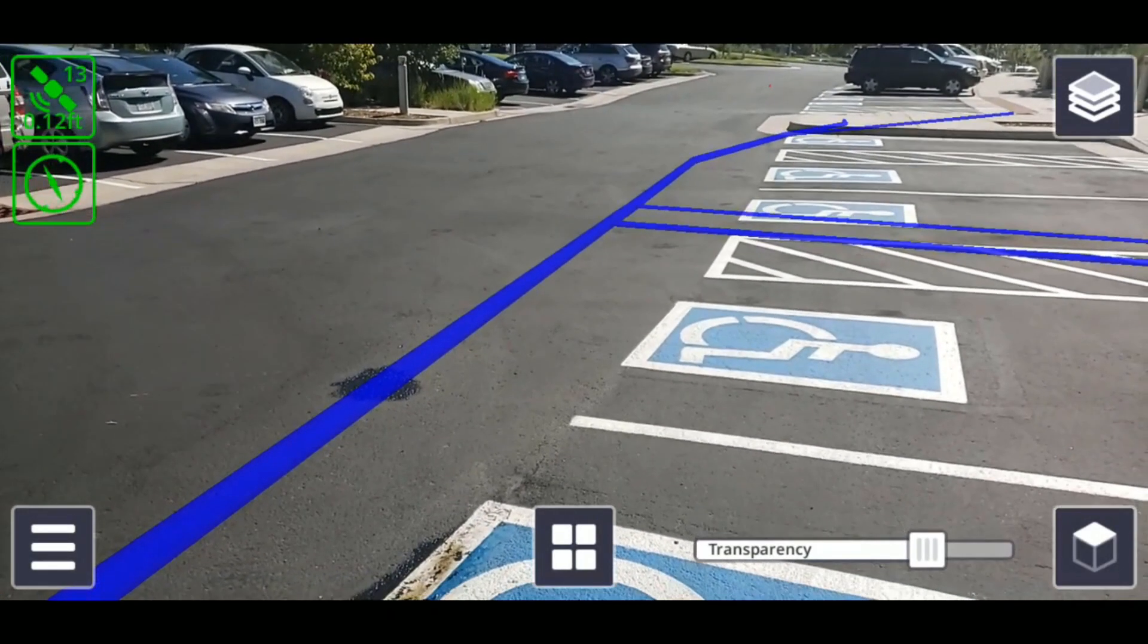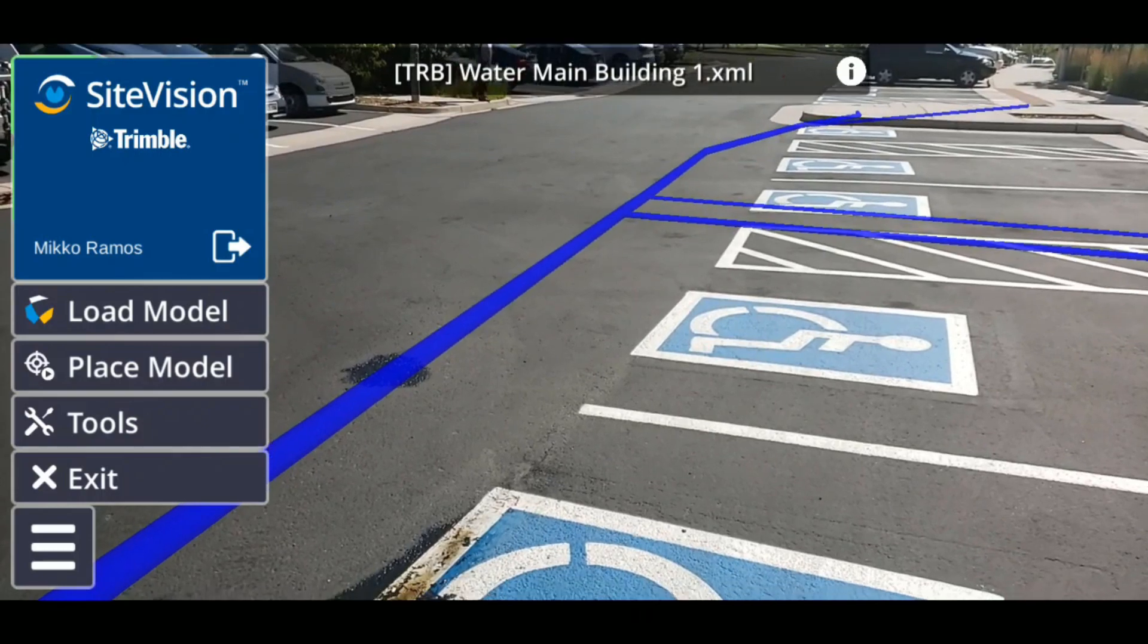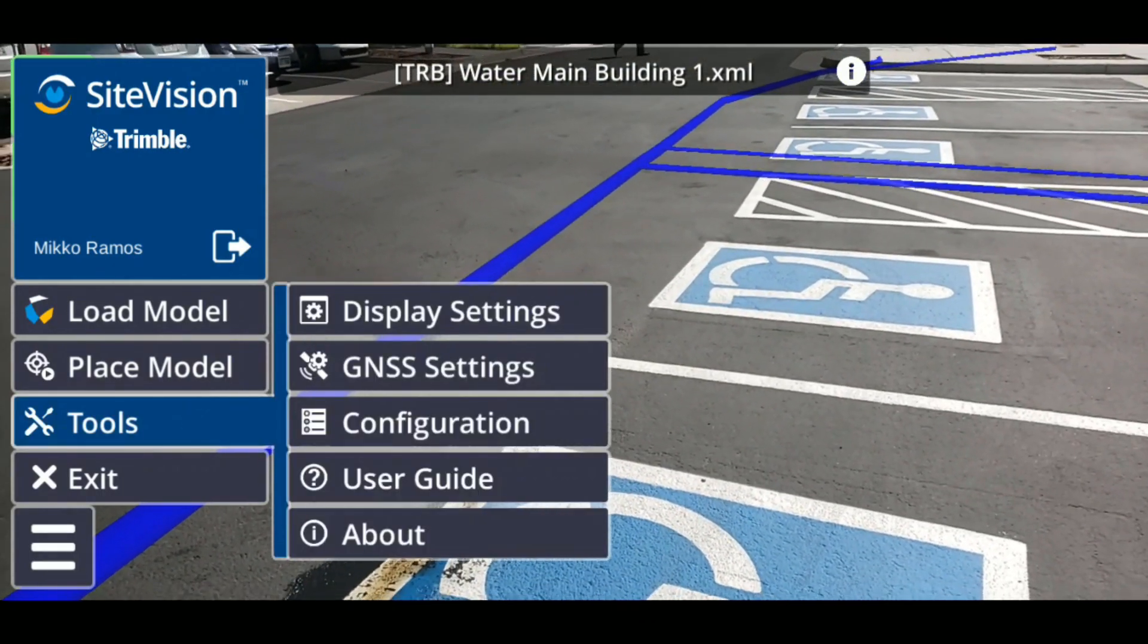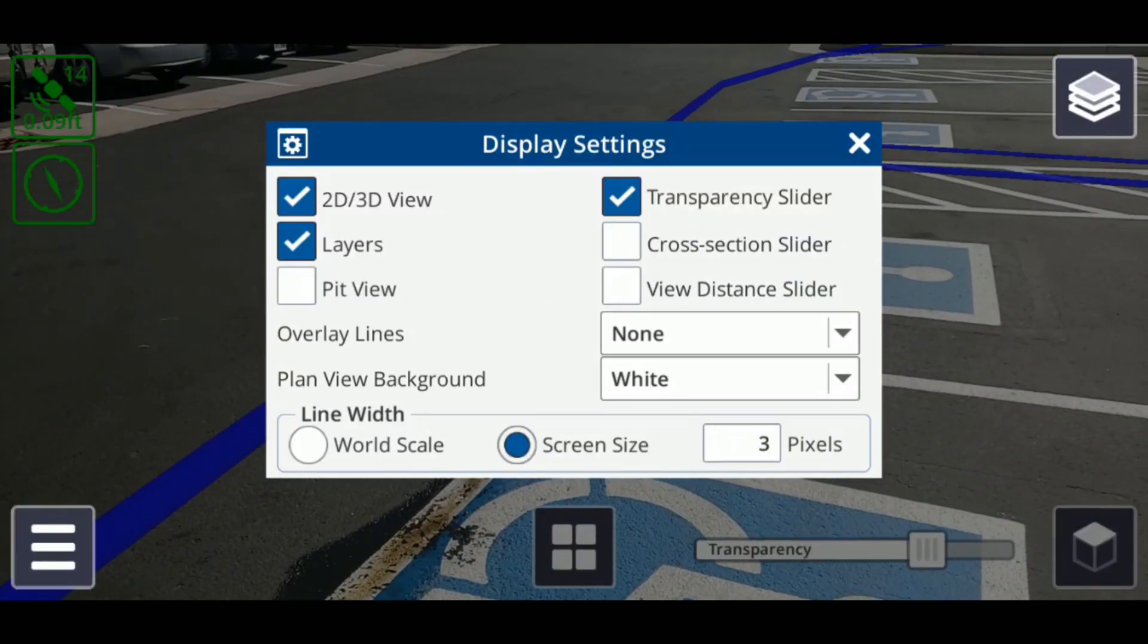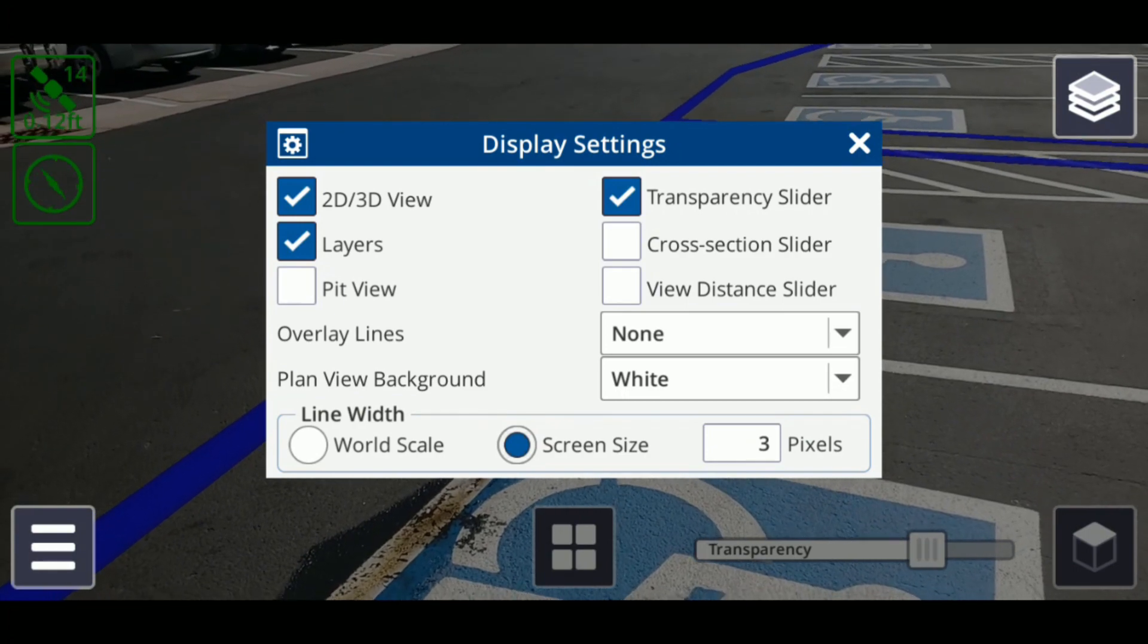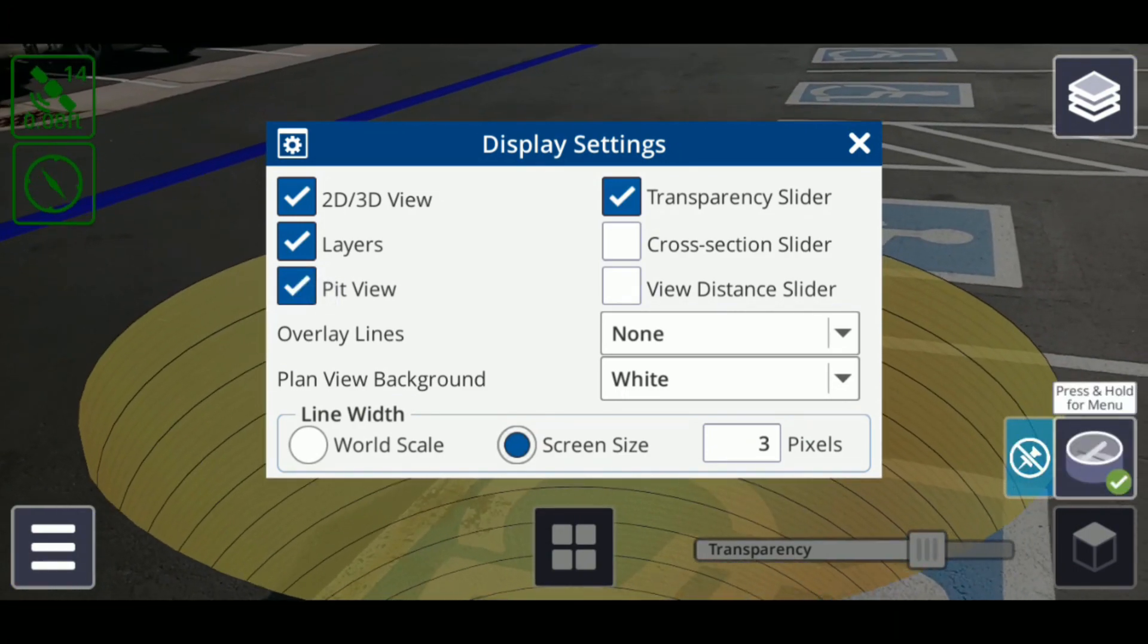To enable pit view, tap the menu icon in the lower left corner, then tap tools, followed by display settings. Tap the checkbox next to pit view to activate it, then exit the window by tapping the X icon on the upper right.